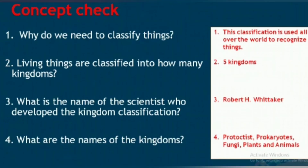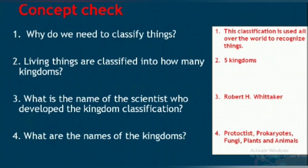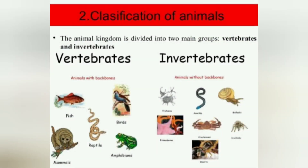Concept check. Why do we need to classify things? This classification is used all over the world to recognize things. Living things are classified into how many kingdoms? Five kingdoms. What is the name of the scientist who developed the kingdom classification? Robert H. Whittaker.